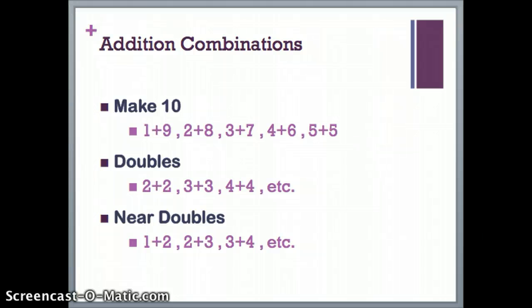Finally, I can look for near doubles facts. Near doubles add two numbers that are next to each other when we count. I can use doubles facts to help me count them. If I know 2 plus 2 equals 4, then I can use it to solve 2 plus 3, since it adds one more. 2 plus 2 equals 4, plus one more is 5. Some examples of near doubles facts are 1 plus 2, 2 plus 3, and 3 plus 4.